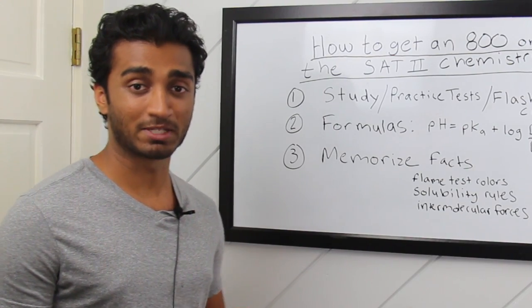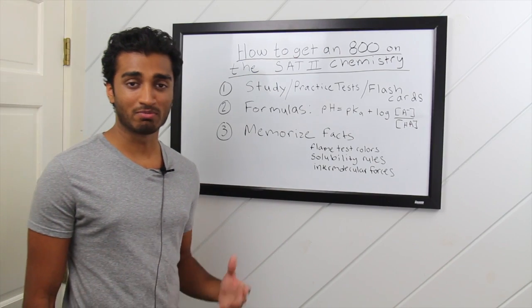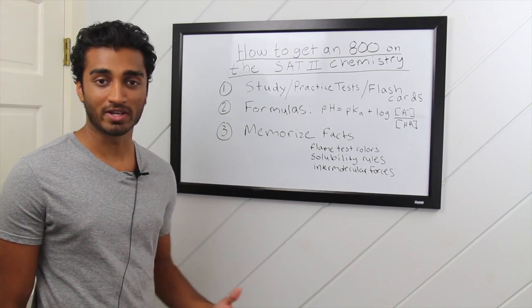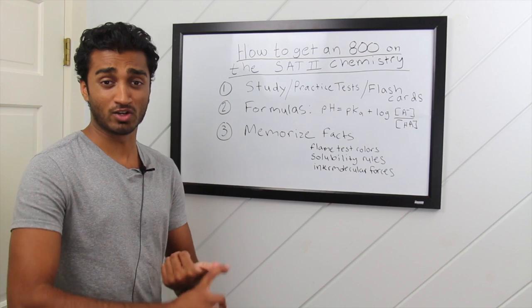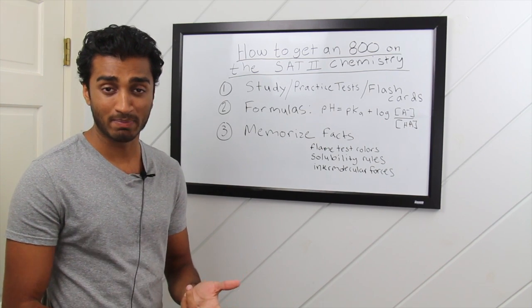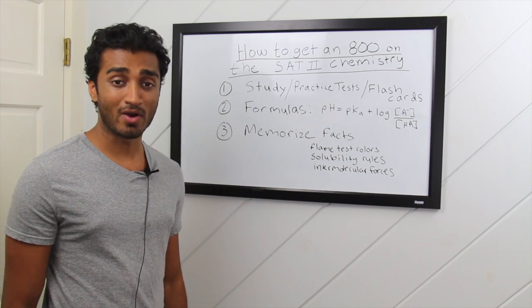Then start immediately doing practice problems. As you get practice problems wrong, start to think about why you're getting it wrong. Is it a key equation, a fact, or a concept that you're just not getting? Write it down on your flashcard.